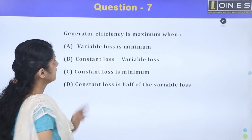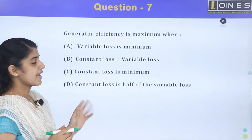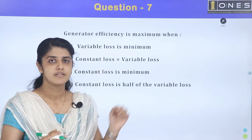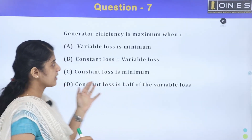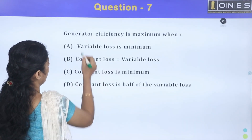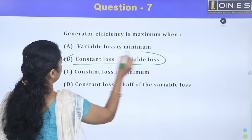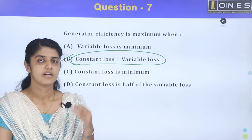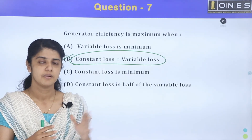Next question: generator efficiency is maximum when. All electrical machines have a maximum efficiency condition. For a generator, the maximum efficiency condition is when the constant loss equals the variable loss.